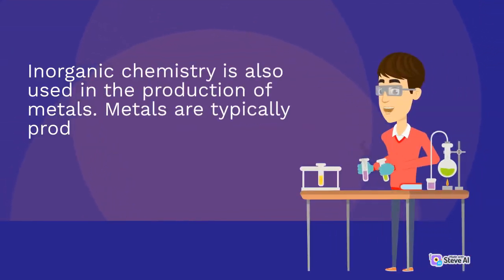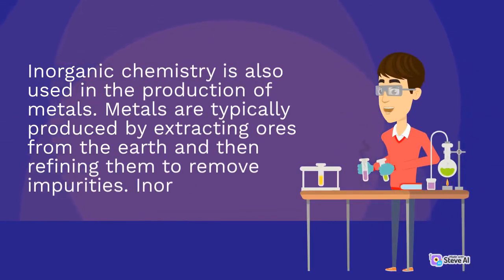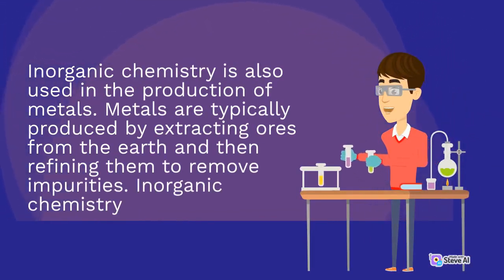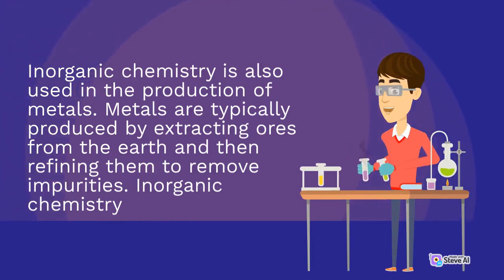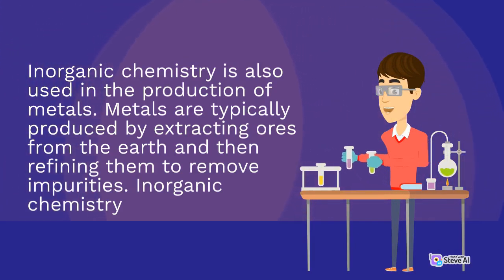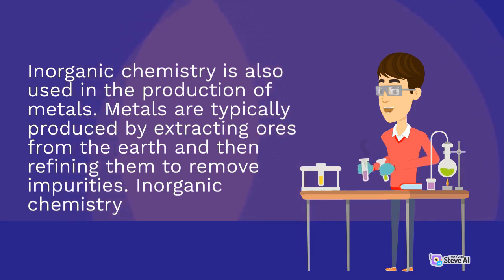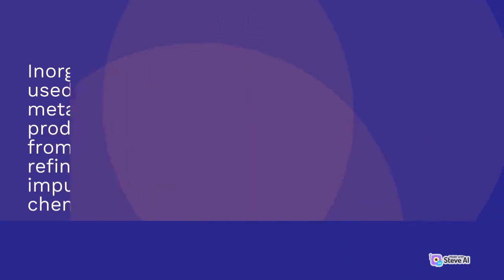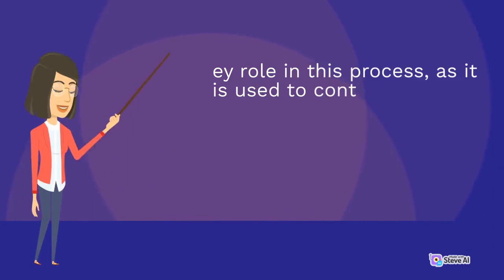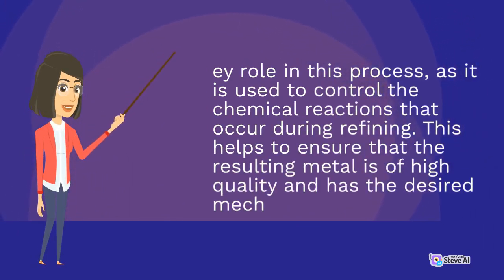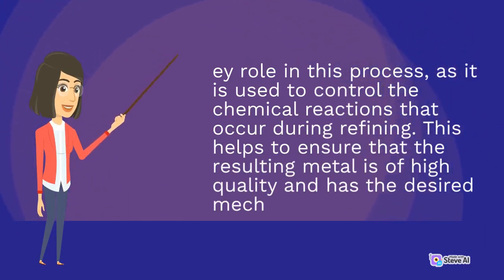Inorganic chemistry is also used in the production of metals. Metals are typically produced by extracting ores from the earth and then refining them to remove impurities. Inorganic chemistry plays a role in this process, as it is used to control the chemical reactions that occur during refining.